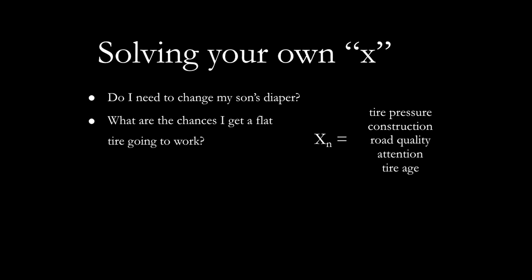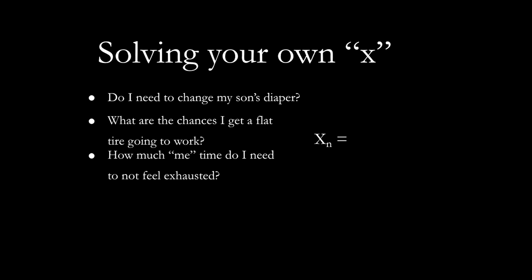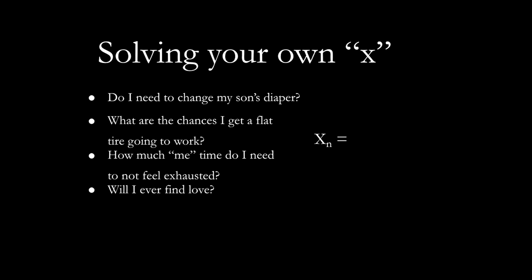Getting a little bit more abstract now — how much me time do I need? Things like sleep, nutrition, personality type come up — which may actually be a fixed variable, introvert versus extrovert. And even more complex: will I ever find love? We can use this to apply everything. How many strangers do I meet in my daily life? How picky am I? What is my confidence? Am I attractive? What's my compatibility? Do I get along with people? You can break these down to start thinking: how do I build up my confidence? How do I make myself more compatible? So you can start estimating when you will find love.